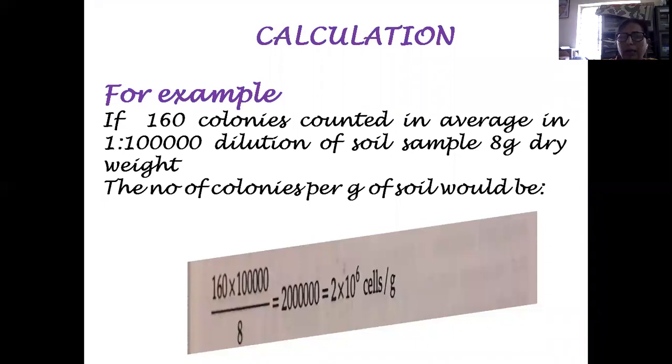For example, a calculation is given. If we get 160 colonies counted on average in 10 raise to power minus 6 dilution of soil sample and soil sample is 8 gram dry weight, the number of colonies will be calculated as 160 into 10 raise to power 6 divided by 8, that equals 2 into 10 raise to power 6 cells per gram of soil.